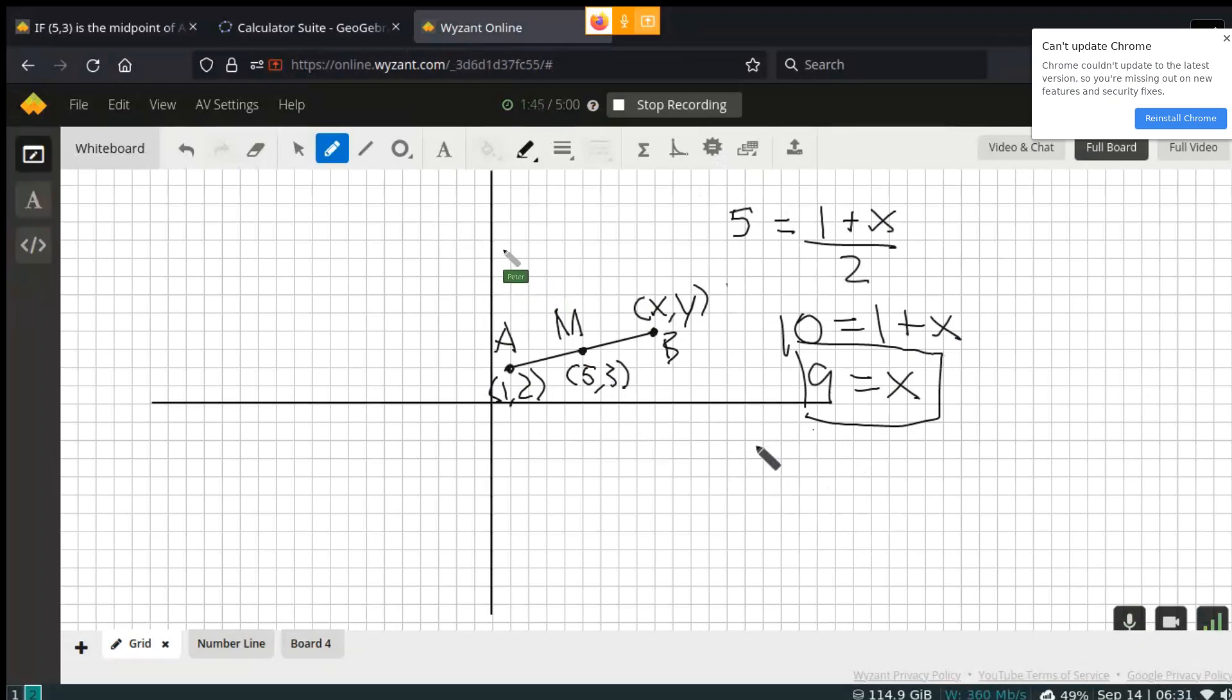We know that 3 is going to be equal to (2 + y)/2. Solve again for y. We get 6 is equal to 2 + y. Subtract the 2 over, we get 4 is equal to y.